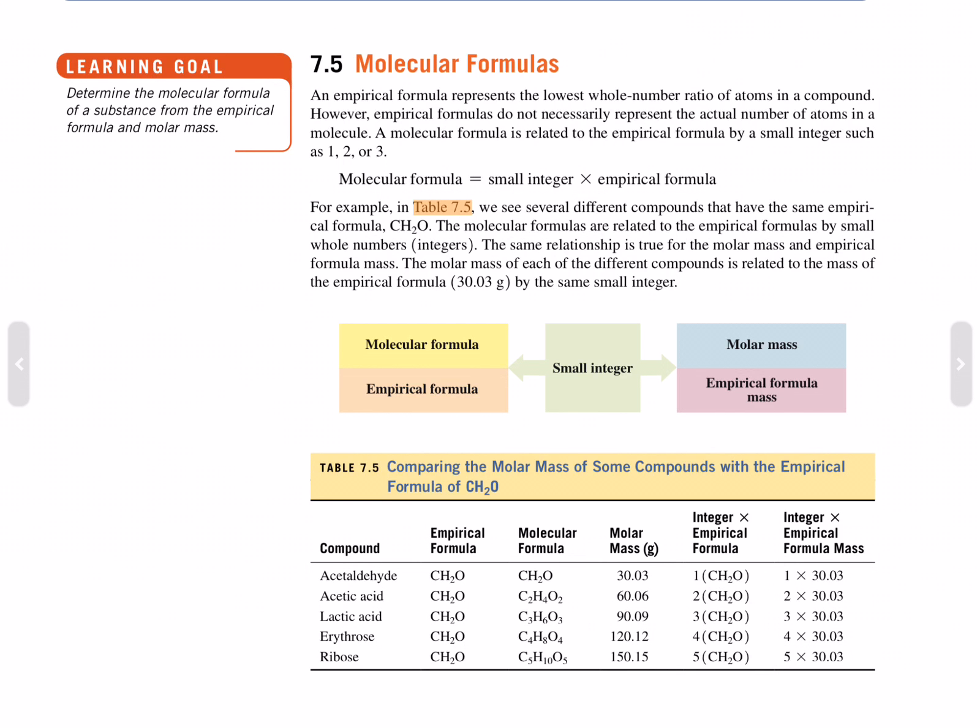Lactic acid with empirical formula CH2O is C3H6O3, which is 90.09. So that's triple the mass, so everything must be multiplied by 3, and so on.